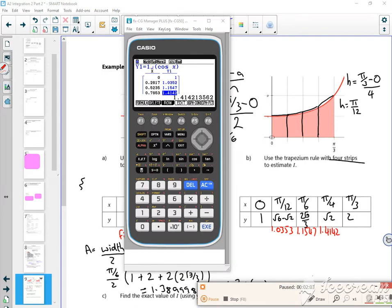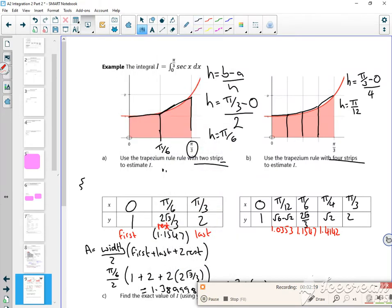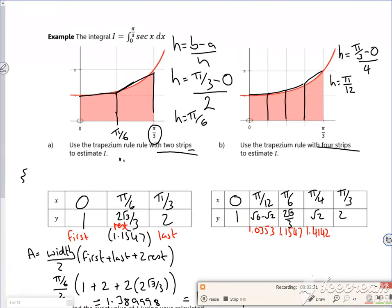So I've just filled it in for those values. Now what you'll notice is there can be a rounding error. Though it shows 1.0352 on the second one down, actually it's 1.0353. So a quick look then back at the formula: this is my first, this is my last, and all of these are my rest.